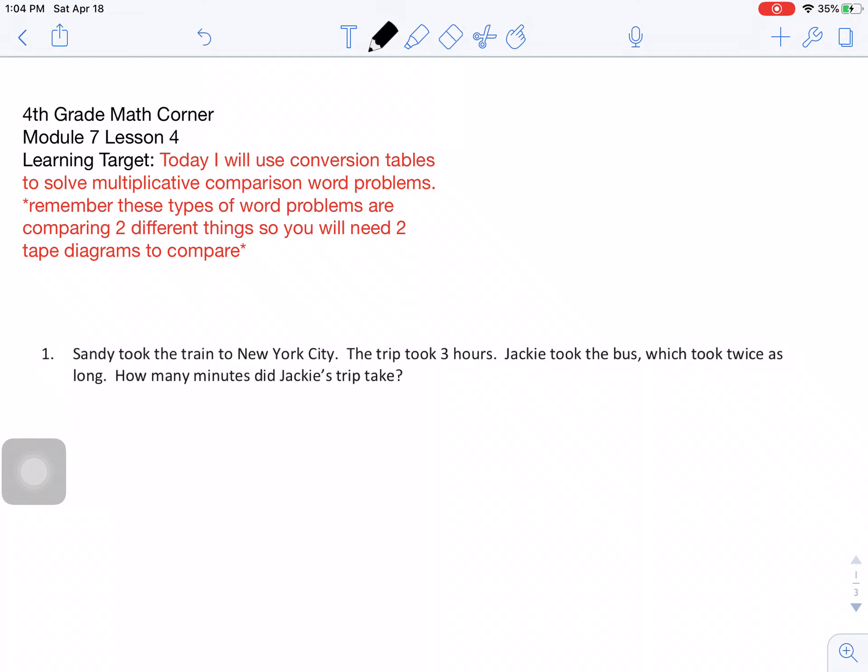So we're given some information. We know that this is Sandy. I'm going to model Sandy with an S. That's her first initial. So Sandy took the train, and her trip only took three hours. So she was able to get there in three hours on the train. But then Jackie, I'm going to label Jackie with a J. That's her first initial.